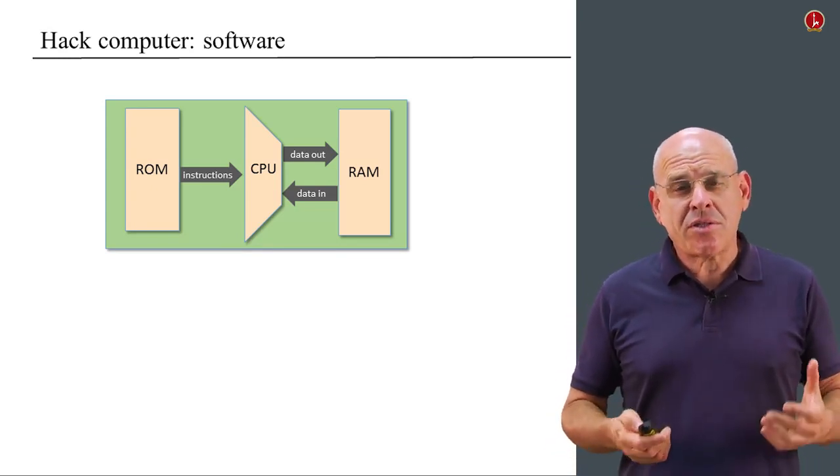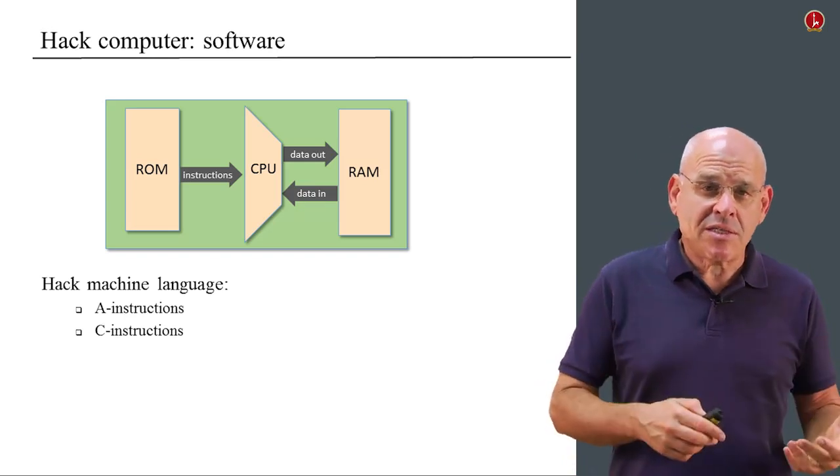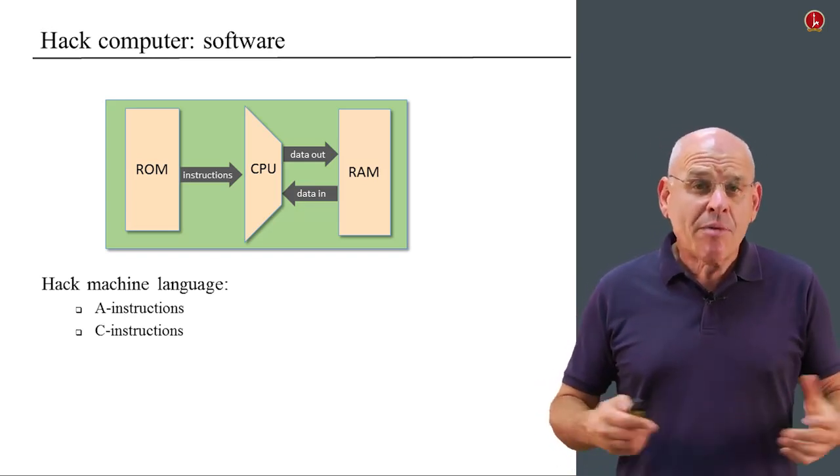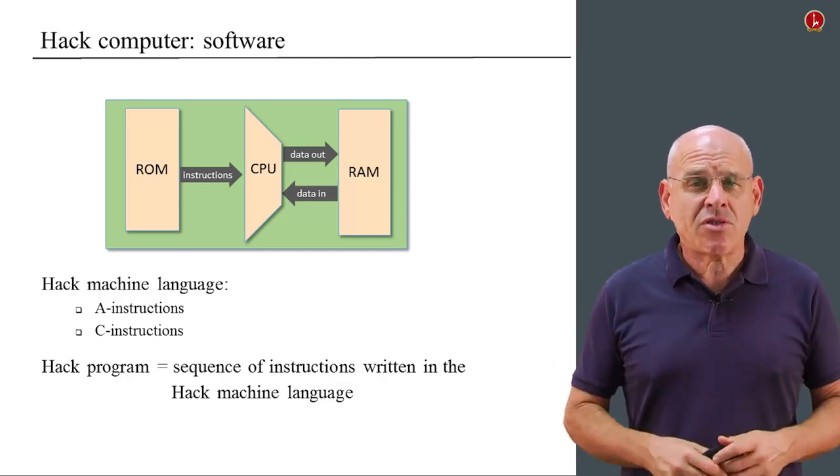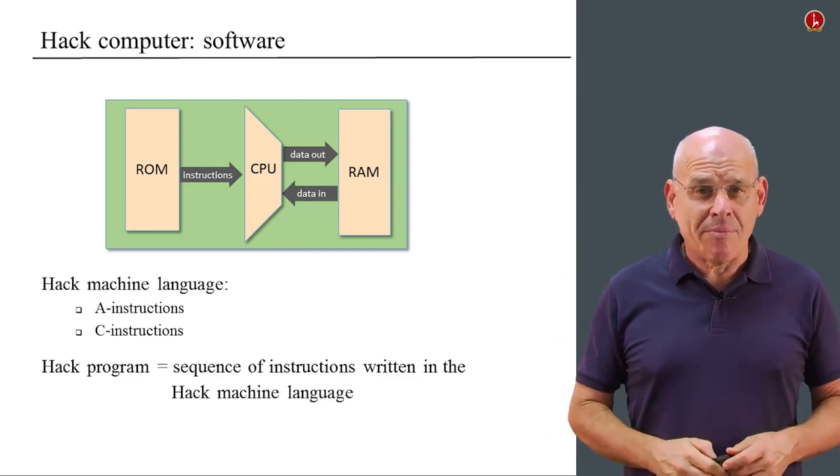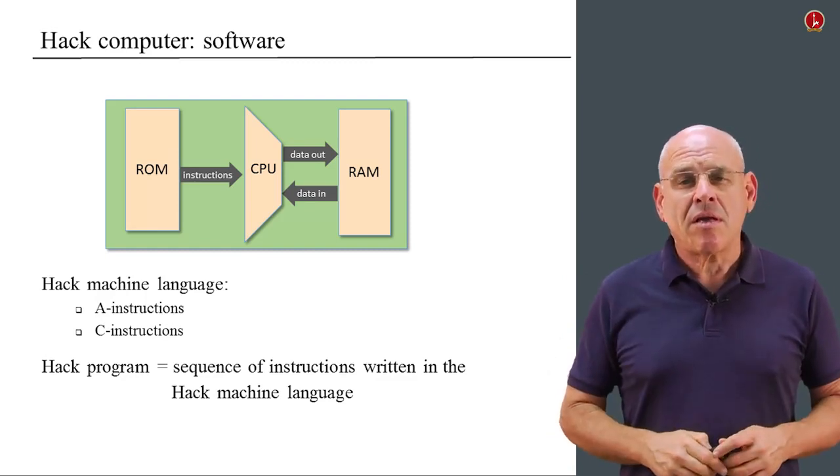And we have a machine language consisting of A instructions and C instructions. We described these instructions in the previous unit. And a Hack program is a sequence of such instructions batched together, and we execute them one at a time. That's the overall picture.